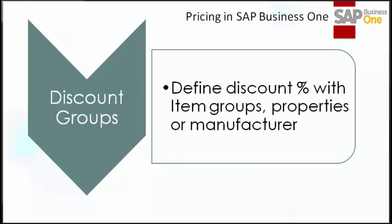The next level of pricing is discount groups. You can define a discount percentage by item groups, properties, or manufacturer. If a sales order line item is relevant for a discount group, then the price will override a price for that item that is based on a period or volume discount or price list.